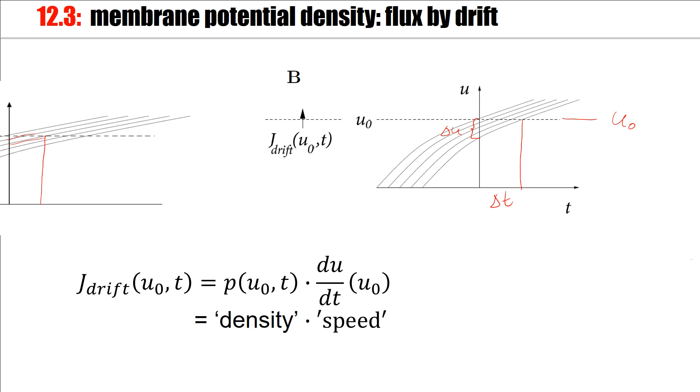In other words, the steeper the trajectories, which means du/dt or the speed, the upward speed, the higher the current, the probability flux through my reference potential U0. And then of course, it also is important that I have trajectories in that region. And P of U0 is the density of the trajectories around U0.